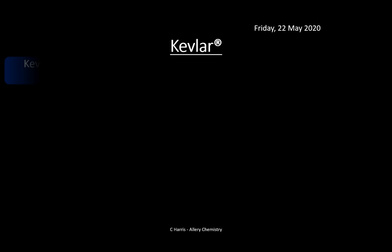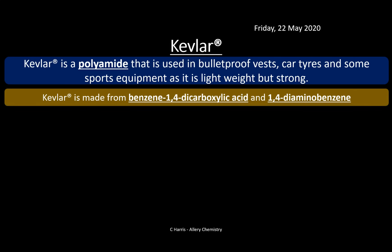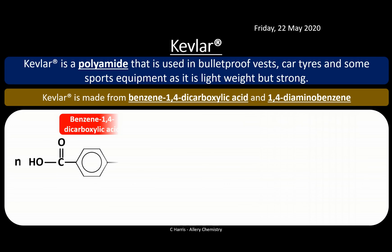A specific example is Kevlar — a bulletproof material that is incredibly strong but less dense than steel, making it useful for bulletproof vests. It's also used in car tires due to abrasion from tarmac, and in sports equipment. It's lightweight but incredibly strong — a marvellous material. Kevlar is made from benzene-1,4-dicarboxylic acid and 1,4-diaminobenzene. You need to know these monomers.